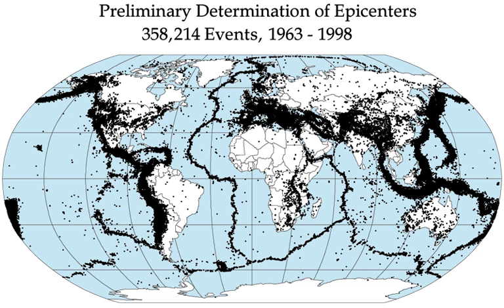Strike-slip faults, particularly continental transforms, can produce major earthquakes up to about magnitude 8. Earthquakes associated with normal faults are generally less than magnitude 7. For every unit increase in magnitude, there is a roughly 30-fold increase in energy released. An earthquake of magnitude 6.0 releases approximately 30 times more energy than a 5.0 magnitude earthquake, and a 7.0 magnitude earthquake releases 900 times more energy than a 5.0 magnitude earthquake.